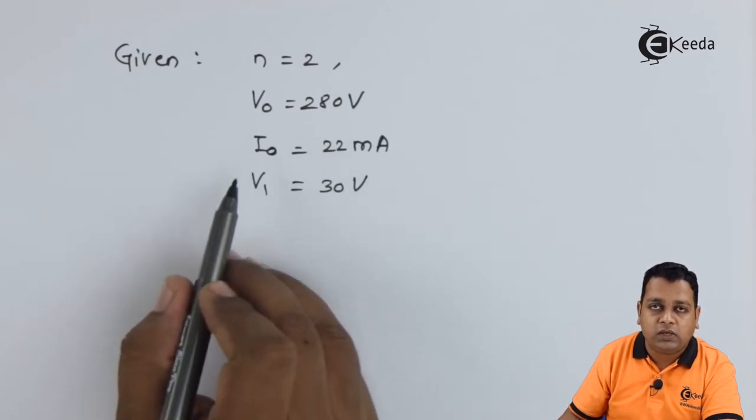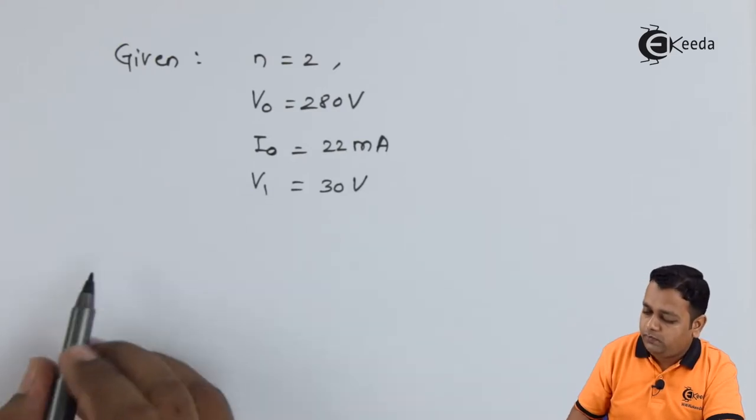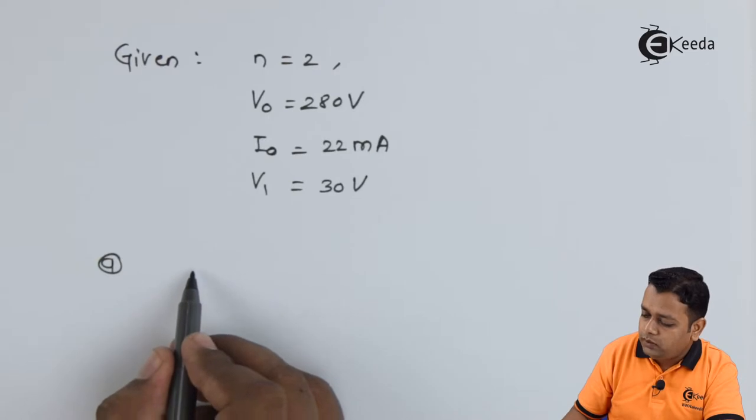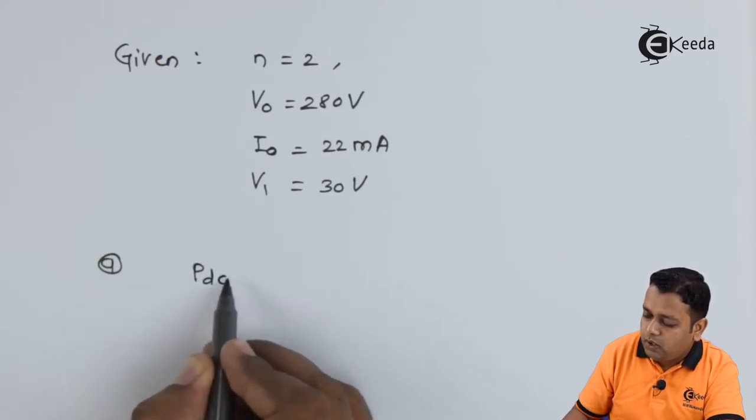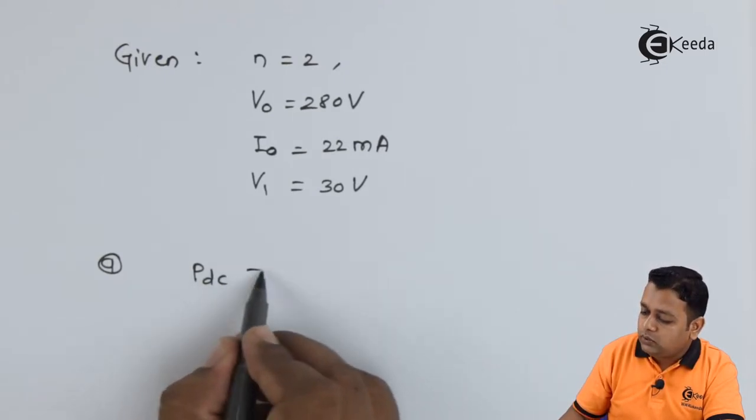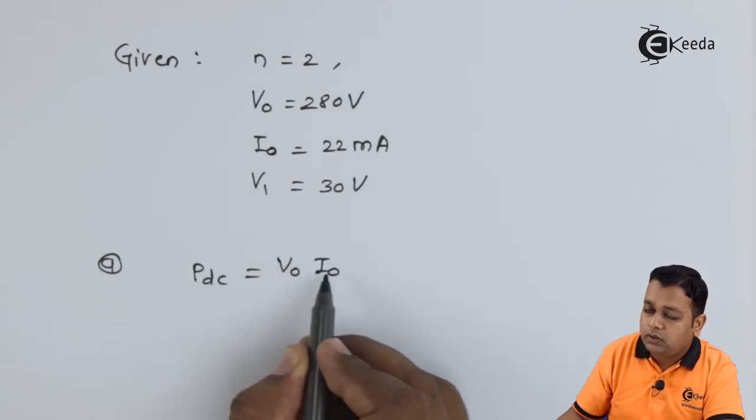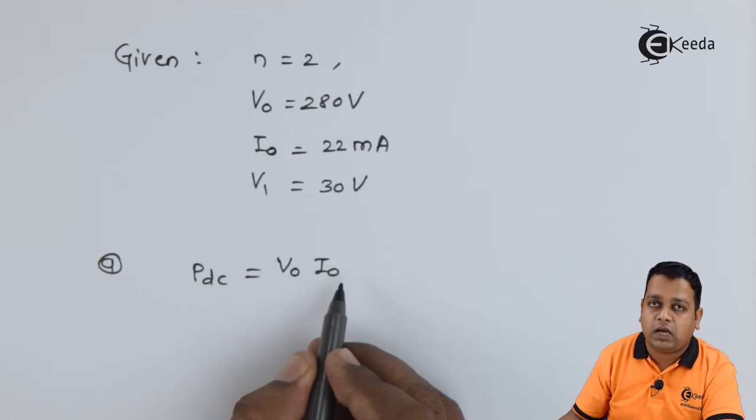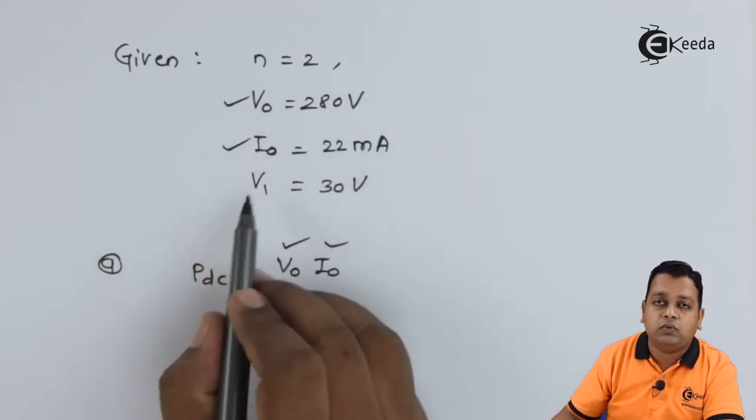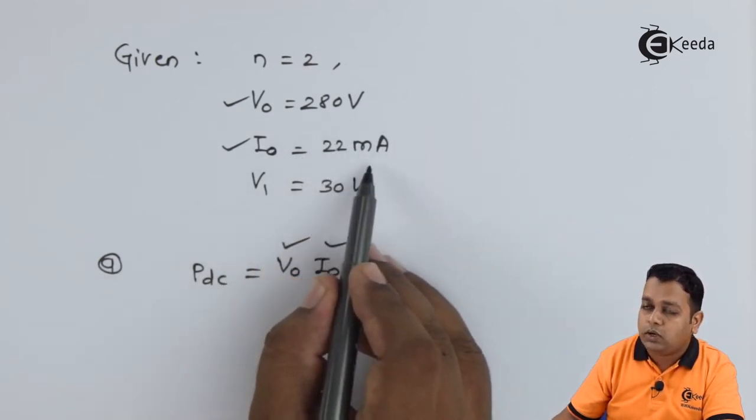So with these given details we can use the formulas so that the first parameter can be calculated. So for part a we want the input power. So the input power can be denoted by P_DC. Basically it is of DC type. So it is nothing but the multiplication of the voltage V0 with that of the current for the beam that is I0. So V0 and I0 both are given to us in our problem statement. V0 is equal to 280 volts, I0 is equal to 22 milliampere.